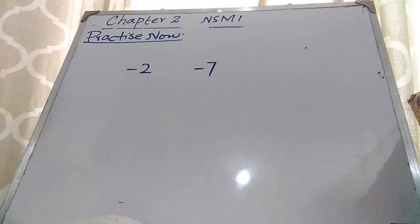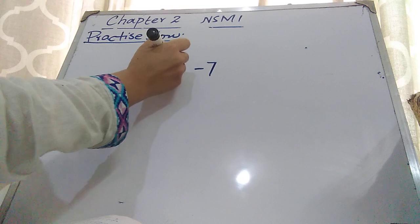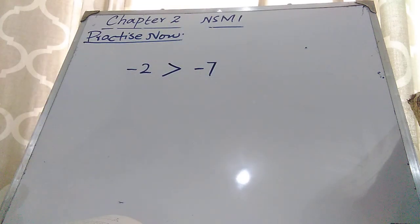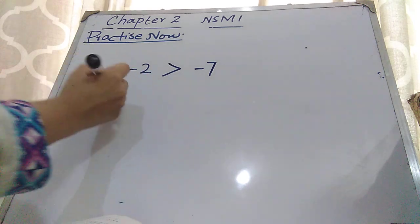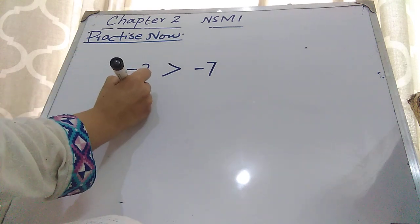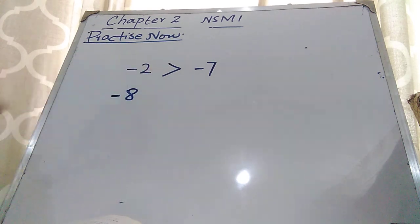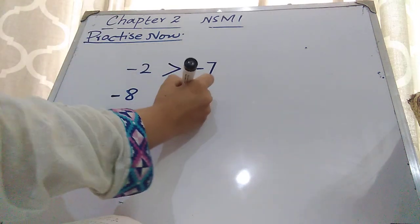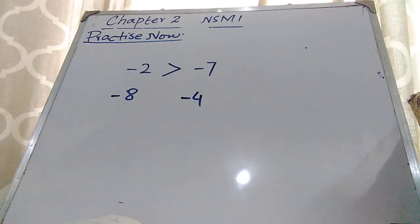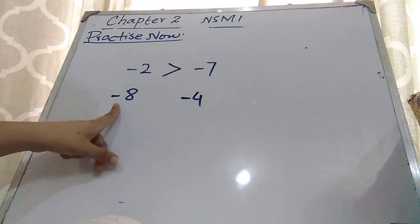So minus 2 will be greater than minus 7 — you will not write it as smaller than. And in the same way, if it is minus 8 and minus 4...